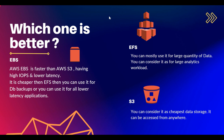For EFS, you can mostly use it for large quantities of data and large analytics workloads. For applications requiring high IOPS and lower latency — like DB backups — consider EBS. If you need storage that you can access from anywhere, use S3, which is also cheaper. In terms of access scope: EBS is accessible only from a particular region, EFS is accessible from multiple availability zones, and S3 is accessible from anywhere over the internet.